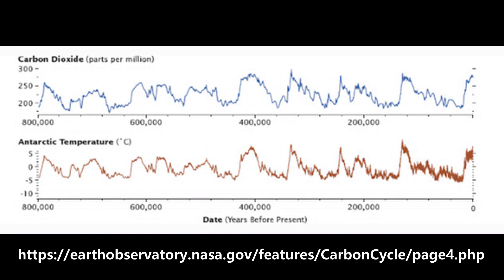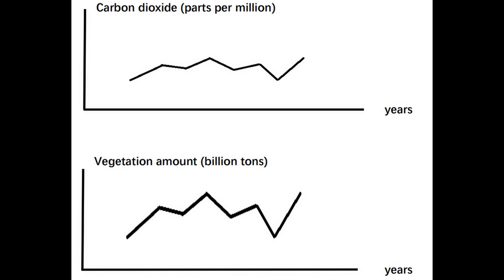This graph shows the relationship between the temperature of Earth's atmosphere and the carbon dioxide content in the atmosphere over the past 800,000 years. The mainstream scientific community believes atmospheric temperature changes with CO₂ content. A second graph shows the relationship between CO₂ content and the amount of vegetation, demonstrating that total vegetation on Earth varies with CO₂ content under normal conditions.